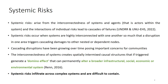Cascading disruptions or consequences have been growing over time, and these have important implications for communities. When we talk about interconnectedness of systems and the risks which come along, we say that this interconnectedness generates a domino effect, affecting a number of elements like infrastructural, social, economic, or environmental systems.